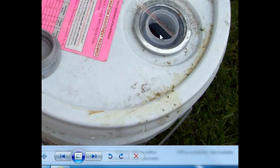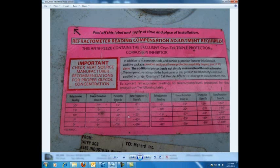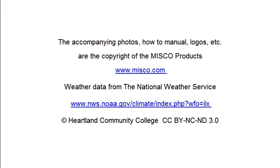Just to recap: you take your reading, take a clean sample of what you've got, put it in your refractometer, and look to see what that percentage is. Then go to the manufacturer's reference chart and read what the correction value is. Every product will be slightly different, and we need to know those values. That, in a nutshell, is how we read the freeze point of a glycol system.